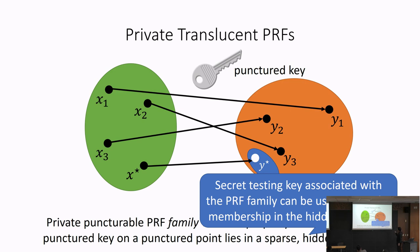The high-level idea is that an adversary, given either a random sample from the subspace versus a random sample outside the subspace, cannot distinguish which one it comes from — even given the actual description of the punctured PRF. The subspace is specific to the PRF family itself and is the same for all keys in the family.